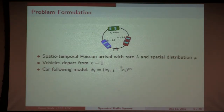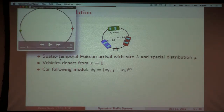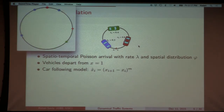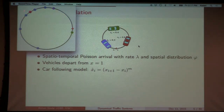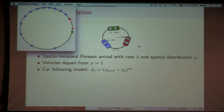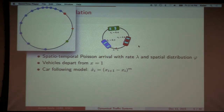Here's the problem formulation for the first part, illustrated with a movie. For simplicity, I consider a circular road. Vehicles arrive according to a spatio-temporal Poisson process with rate lambda and spatial distribution phi — meaning according to a Poisson clock at rate lambda, a vehicle arrives and its location is sampled from distribution phi over the circle. In this figure, red dots are vehicles which have just arrived, and green is the vehicle which is just departing. All vehicles depart from the same point. The departure can also be random, but to keep things tractable I have only one random parameter, which is the arrival process.